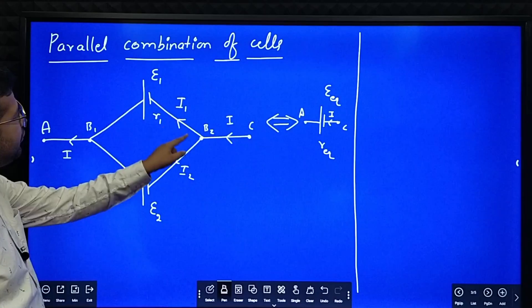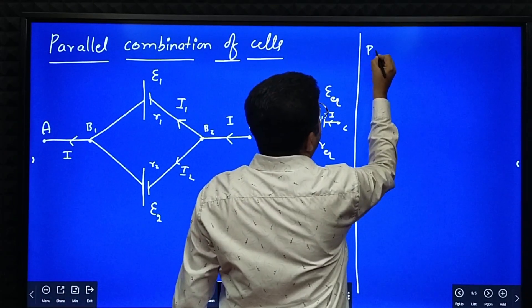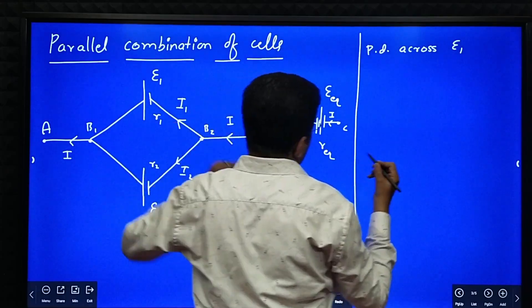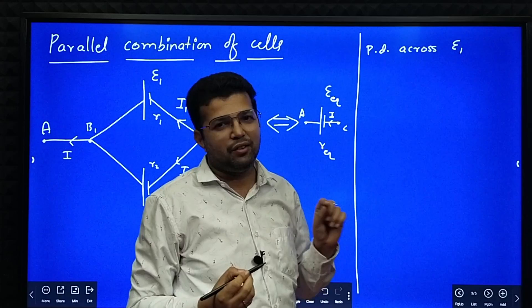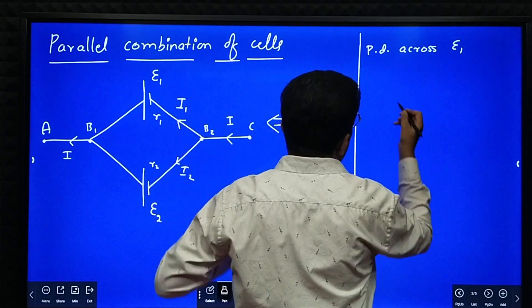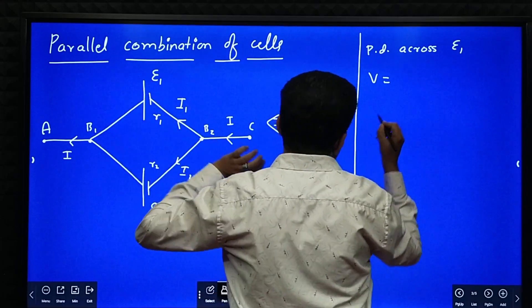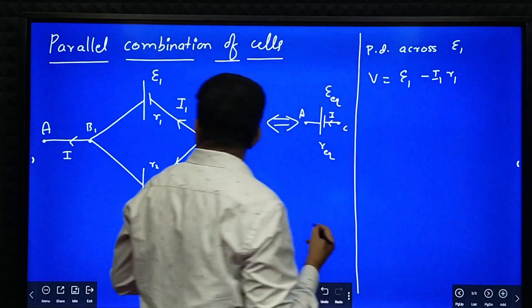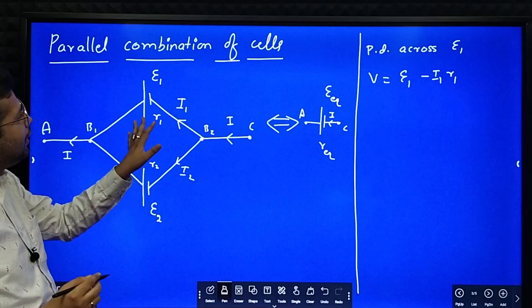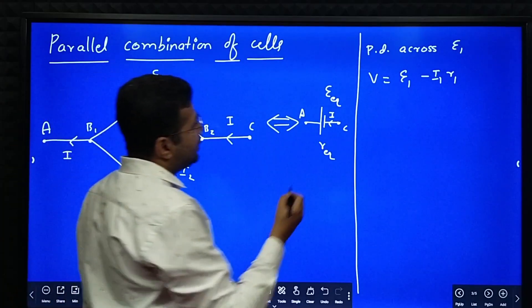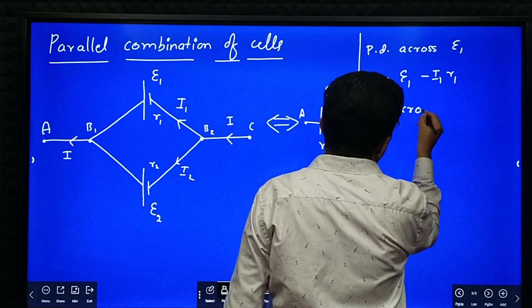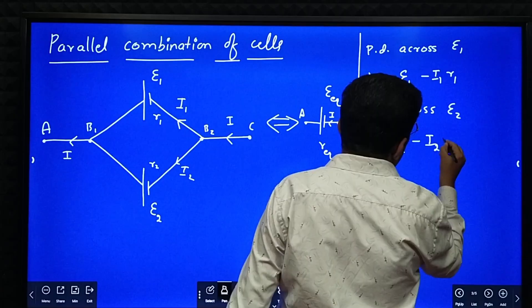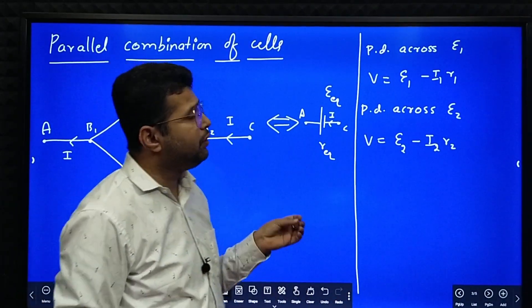First we'll find the potential difference across E1. Using the relation V = E − IR, the potential difference across E1 is V = E1 − I1R1. Since the two cells are in parallel, the potential difference across E1 equals the potential difference across E2. So the potential difference across E2 is V = E2 − I2R2.